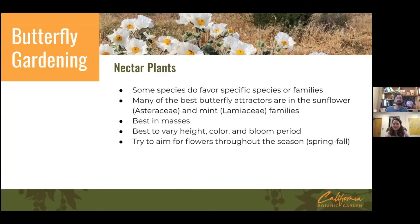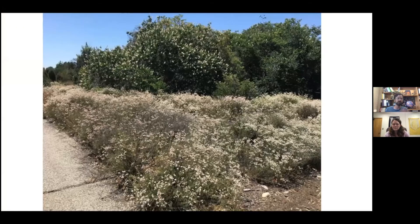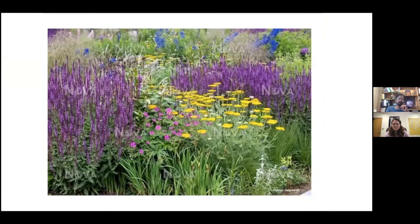Here's an example of massing — a big mass of California buckwheat in the garden with California buckeye in the background. It's just abuzz with small blue butterflies and all kinds of other pollinators. This perennial border style of design, mixing colors and heights, lends itself very well to butterfly gardening.